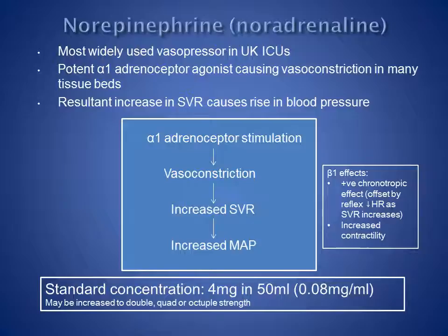In our ICU, noradrenaline is made up in a standard concentration of 4 mg in 50 mLs and administered by a syringe driver. In patients with severe sepsis, this concentration may be increased to 8, 16, or even 32 mg in 50 mLs if hypotension is profound and resistant to treatment.